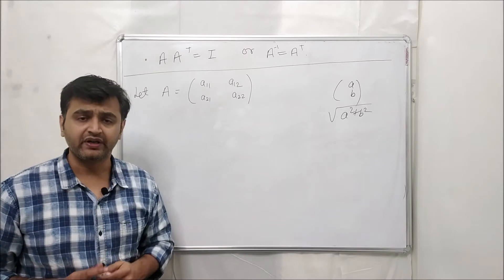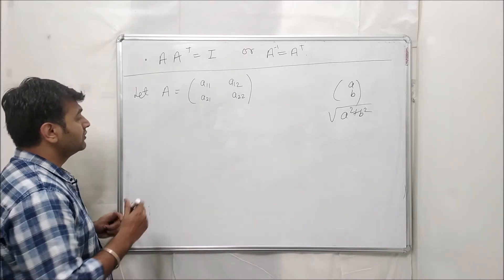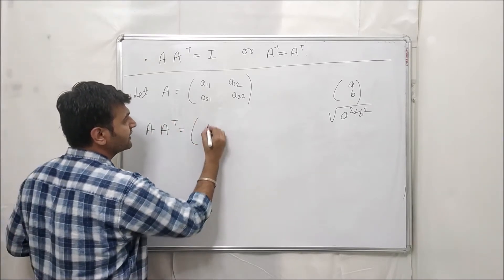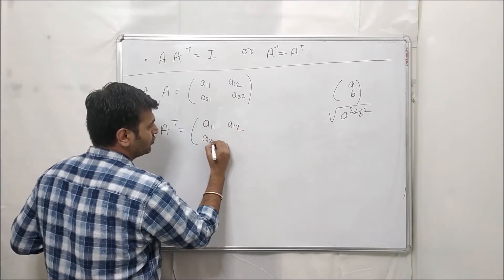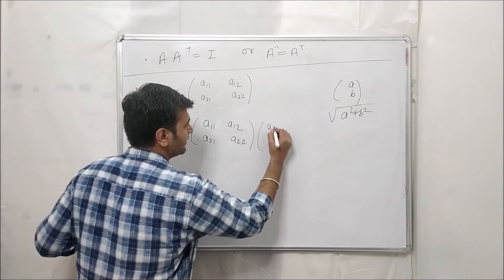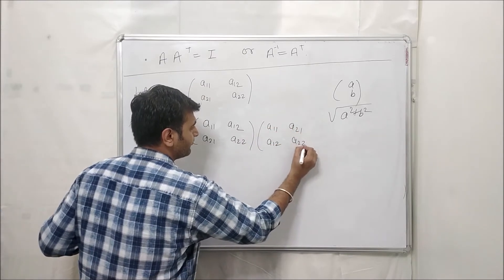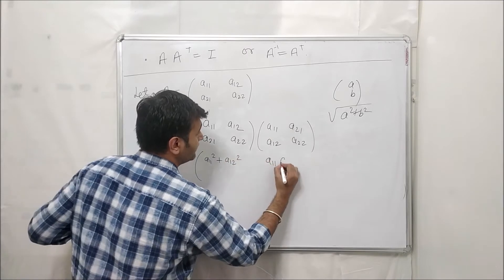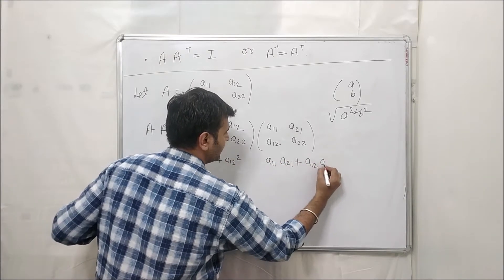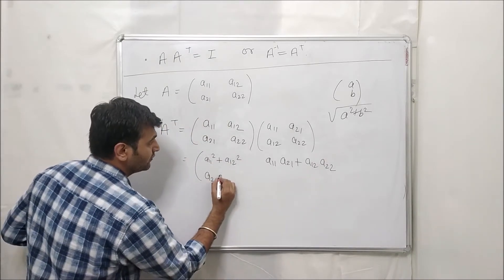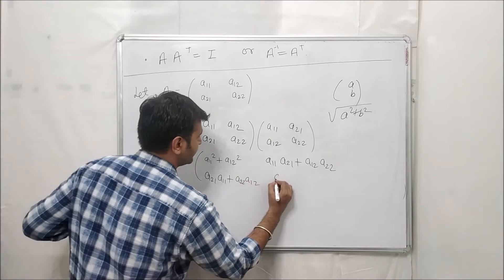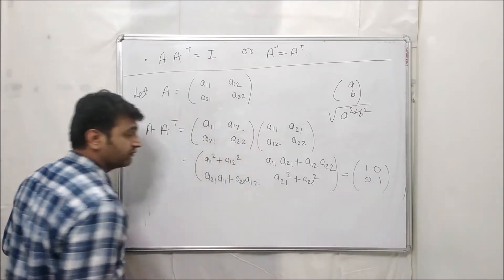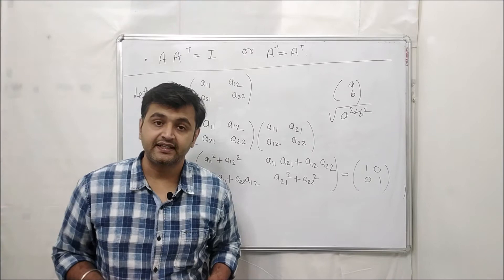To prove this fact, let's go one by one. I'll prove this for a 2×2 matrix first and then go for an n×n matrix. Let A be a 2×2 matrix with entries a₁₁, a₁₂, a₂₁, a₂₂. Computing A^T times A, the product gives: diagonal entries a₁₁² + a₁₂² and a₂₁² + a₂₂², and off-diagonal entries a₁₁·a₂₁ + a₁₂·a₂₂. This equals the identity matrix, since A is orthogonal.